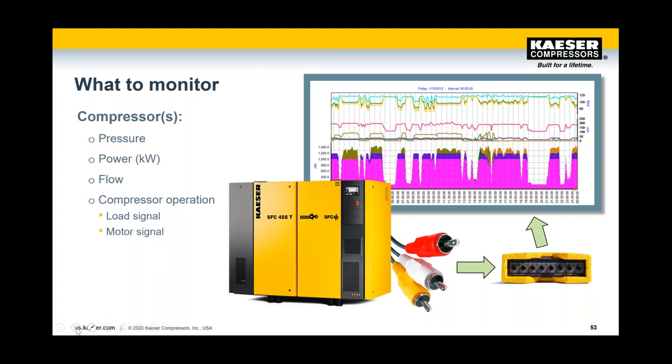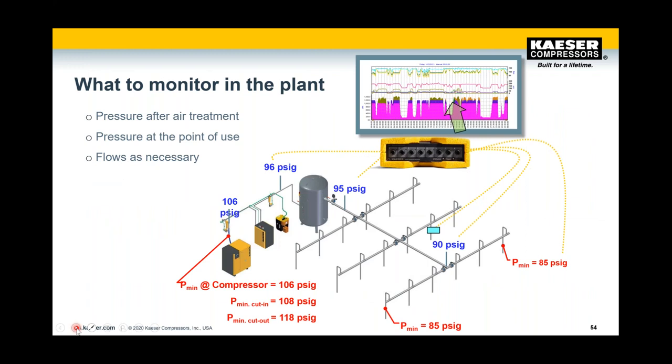What if you don't have the information available from your controller? Monitoring your existing station is a great way to start — track pressure, flow, and power for each compressor, as well as operational signals like load and motor status. However, that's just the supply side. To get a bigger picture of what's going on in your system, monitoring pressures and flows on the demand side will help you complete that puzzle. A simple example includes additional pressure measurements to create a pressure profile across your system, as well as a point-of-use flow meter.